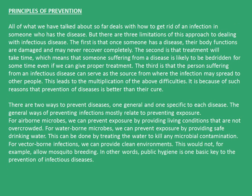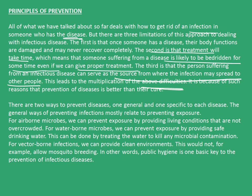Moving forward, now let's see principles of prevention. All of what we have talked about so far deals with how to get rid of an infection in someone who has the disease. But what are the three limitations of this approach? The first limitation is that once someone has a disease, their body functions are damaged and may never recover completely. The second is that treatment will take time, meaning the person suffering is likely to be bedridden for some time even with proper treatment. The third limitation is that the person suffering from an infectious disease can serve as the source from where the infection may spread to other people, leading to multiplication of these difficulties.